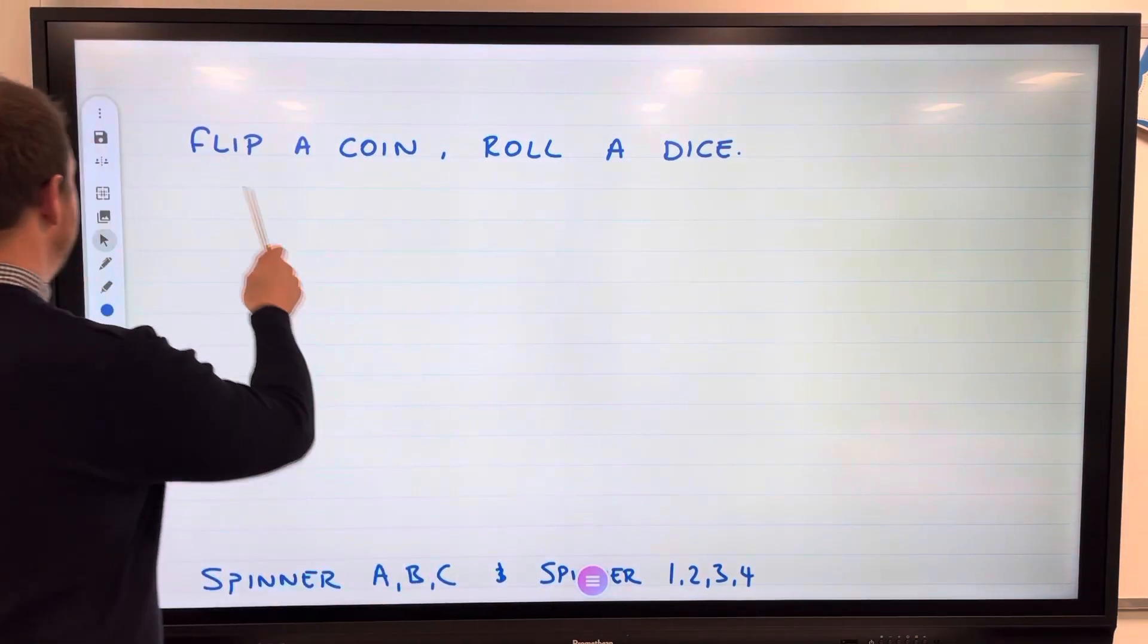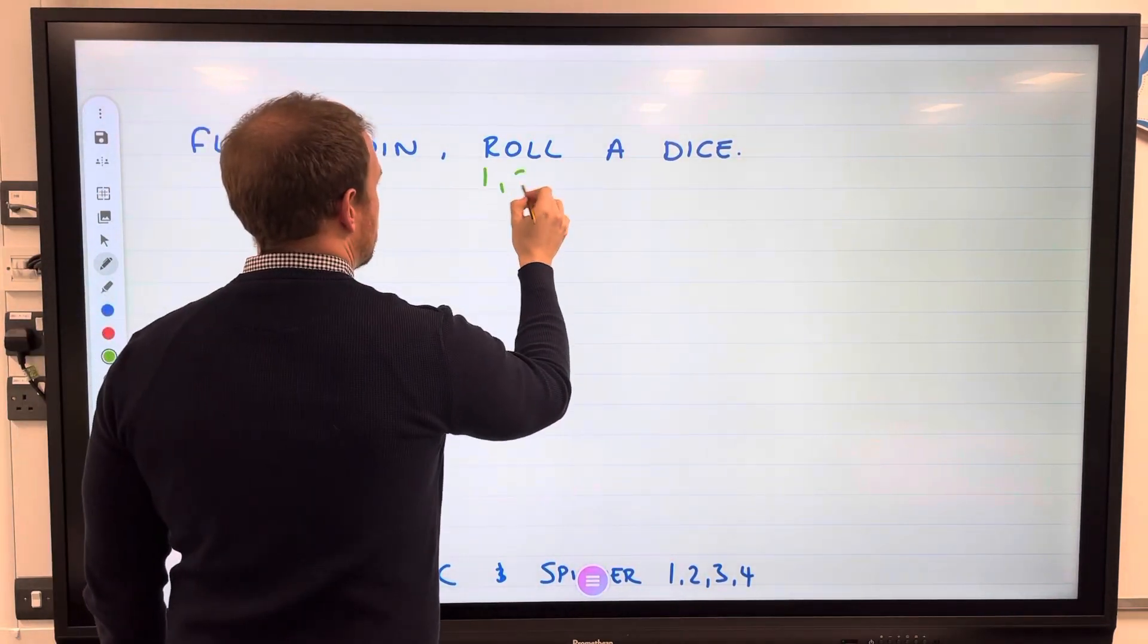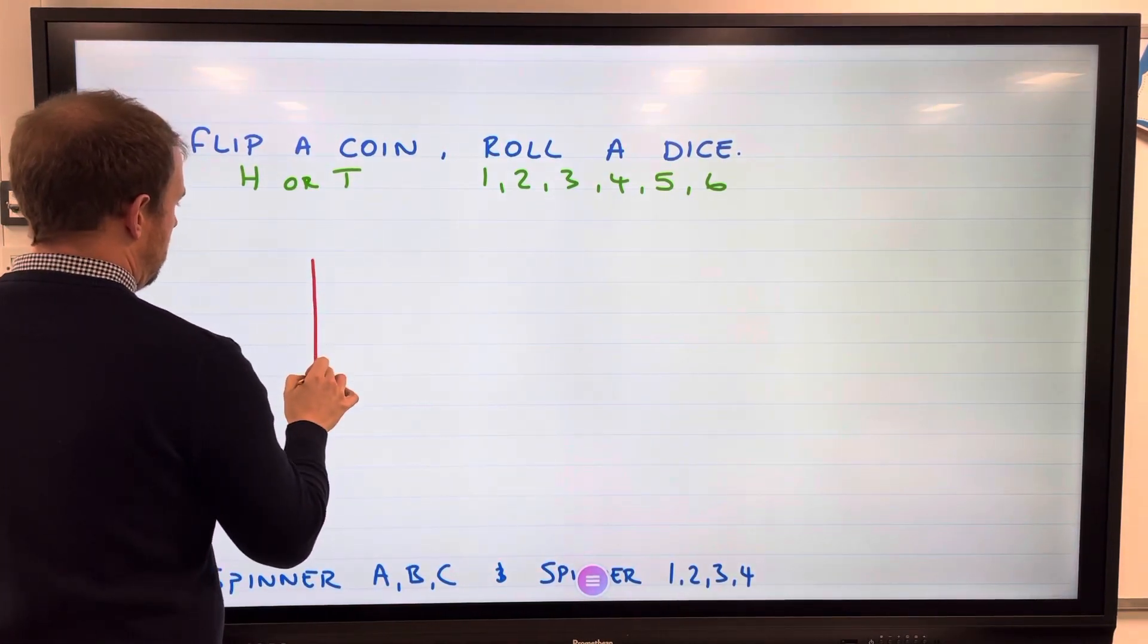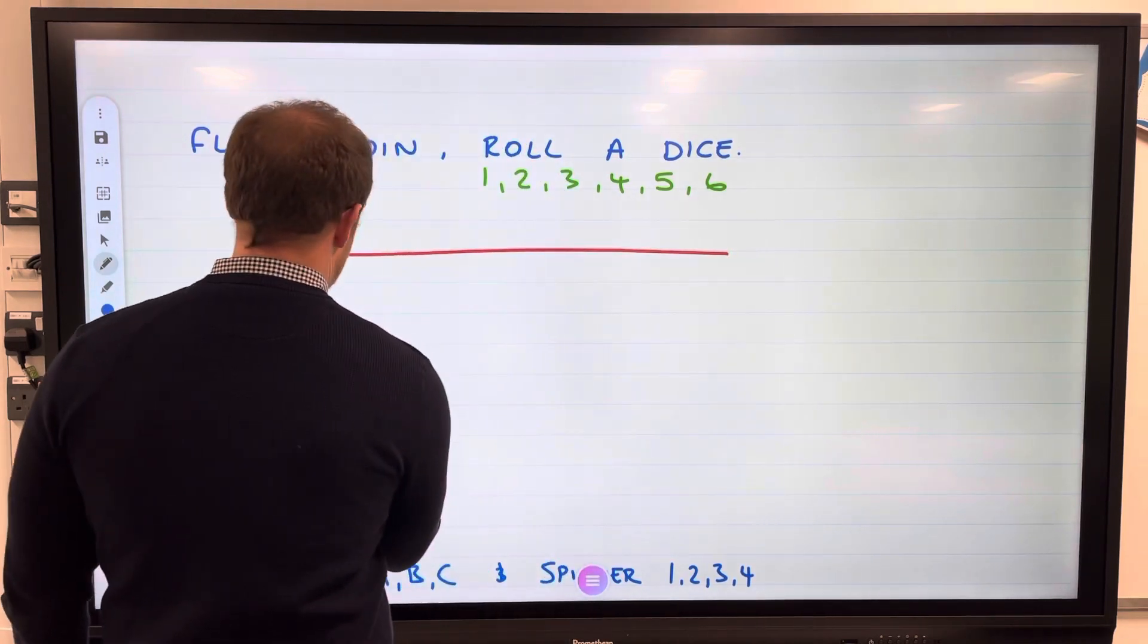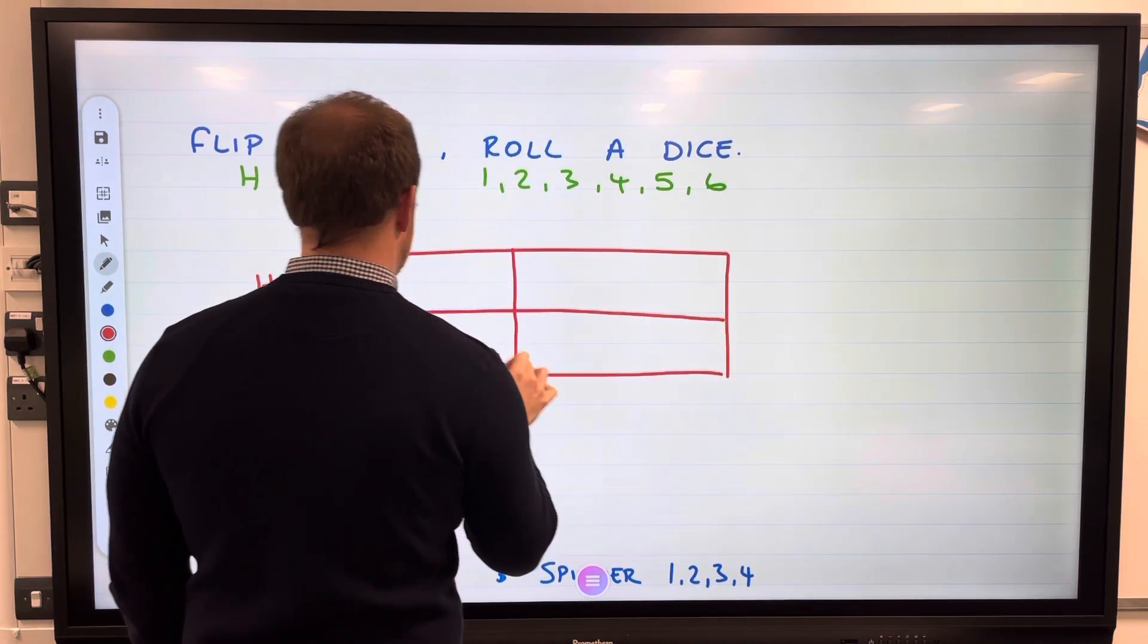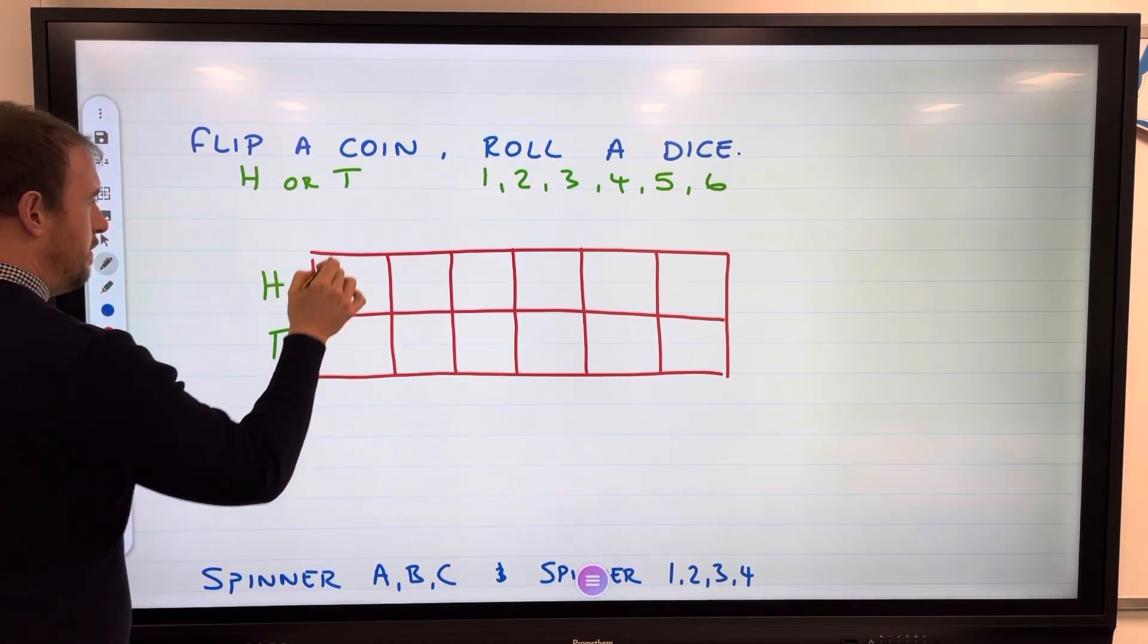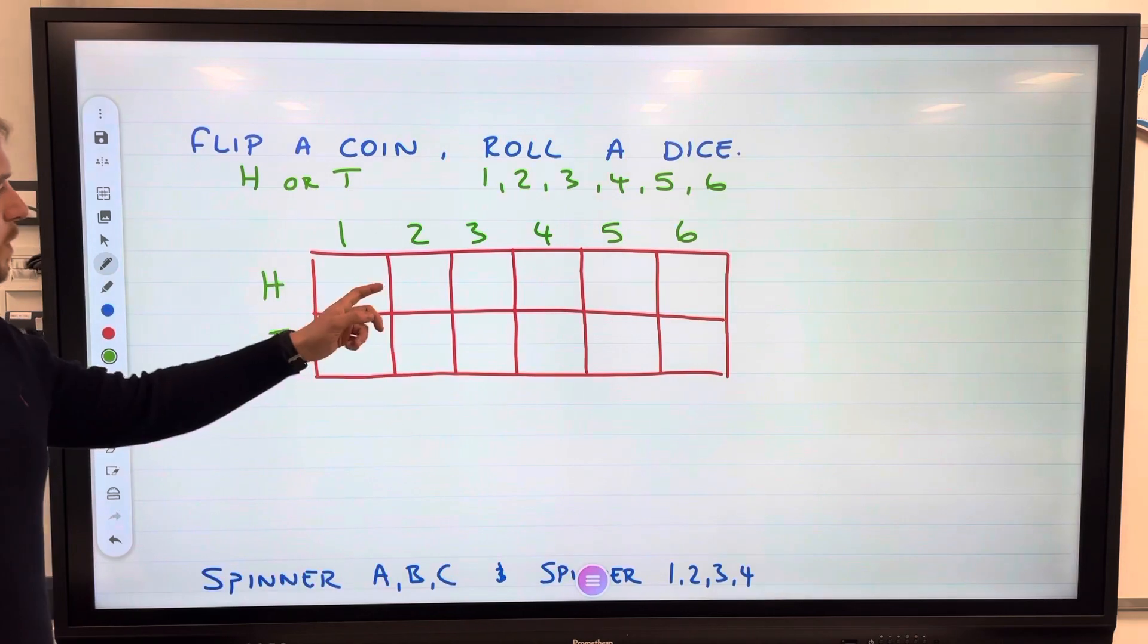Flip a coin, so we know it could be heads or tails. A dice could be one, two, three, four, five, and six. Let's draw a table. We've got head or tail here - I'm going to put H there, T there for tail, and then one, two, three, four, five, six going across here. Let's use a different kind of pen to make this stand out.